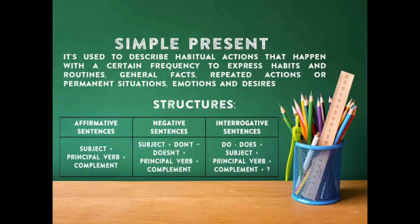Con las oraciones negativas tenemos sujeto, el don't o el doesn't, verbo principal y complemento. En la negativa tenemos que estar pendientes de cuál es el sujeto: I, you, we, they utilizarían el don't, y he, she, it — tercera persona — utilizaría el doesn't. El verbo principal iría en presente, no hay que colocarle nada, y un complemento.